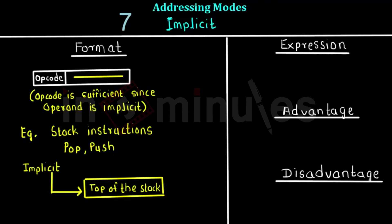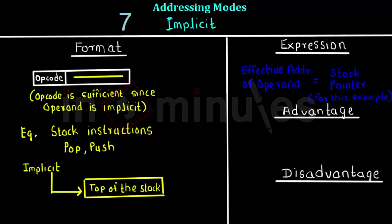Stack instructions always refer to the top of the stack, so there is no need to specify a particular operand — they are directly hardwired inside the system. The effective address is simply the stack pointer. Since pop or push always accesses the stack pointer, there is no need to specify it in the instruction.